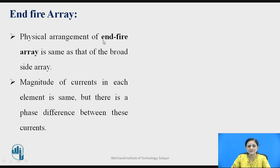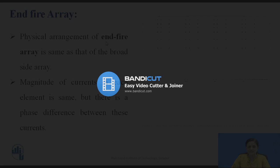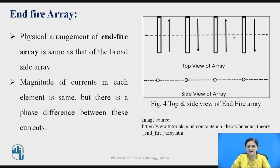The physical arrangement of the end fire array antenna is the same as that of the broadside array antenna. End fire array is the second type of antenna array, where the number of elements are connected collinear with each other. However, the phase of one element is in the upward direction and the second element's phase is in the downward direction. This means the magnitude of currents in each element is the same, but there is a phase difference between these currents.